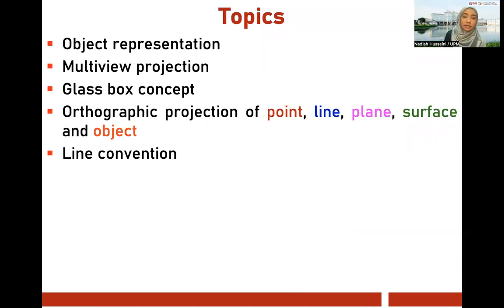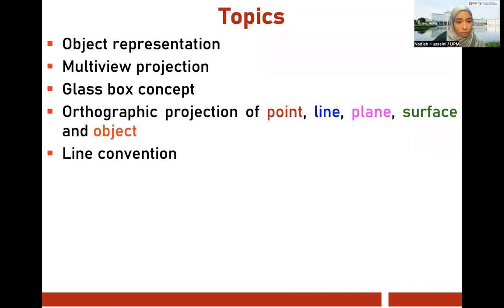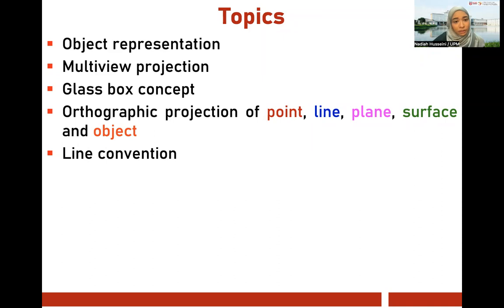Today we are going to cover these topics: object representation, multi-view projection — which is when we have two to three or more views of an object in parallel — the glass box concept including first angle and third angle views, orthographic projection of point, line, plane, surface, and object, and line convention. We've covered a little bit of line convention in our AutoCAD lab with hidden lines and center lines, but today we'll dive deeper.